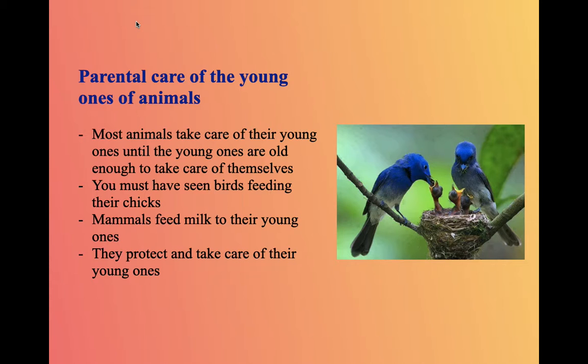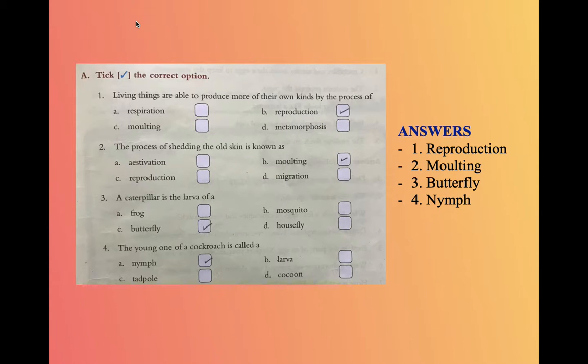Now we will check the exercise of this chapter. We will start with Set A. You have to tick the correct options. The first question: Living things are able to produce more of their own kinds by the process of? The answer is B: reproduction.